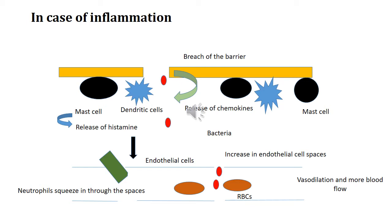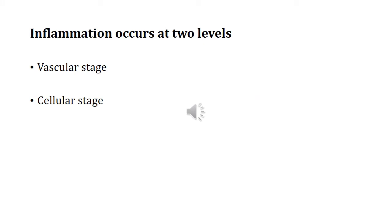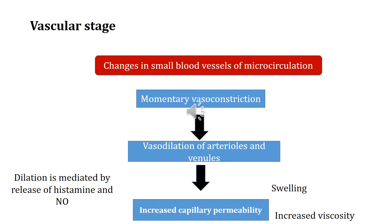Now let us understand these mechanisms in greater detail. The process of inflammation proceeds at two levels: the vascular stage and the cellular stage. The vascular stage is basically characterized by changes in the small blood vessels of microcirculation.